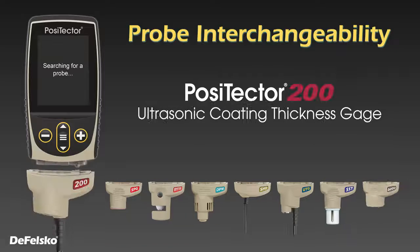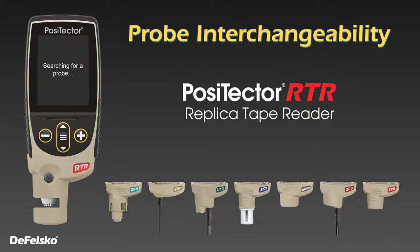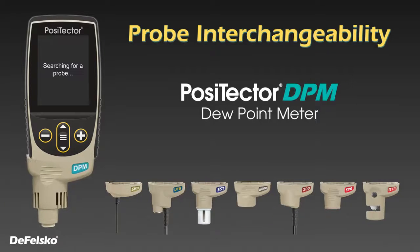With a single gauge body, measure coating thickness on metals or non-metals, dew point, surface profile, soluble salts, hardness, wall thickness, and more.